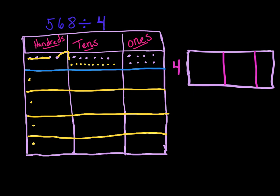So let's split up the 16 tens equally into the 4 rows — that's 4 tens per row. And we have 8 ones, which is divisible by 4, because 4 times 2 is 8. Split up the 8 ones. How many are in each row? We have 1 hundred, 4 tens, and 2 ones. So the quotient is 142.